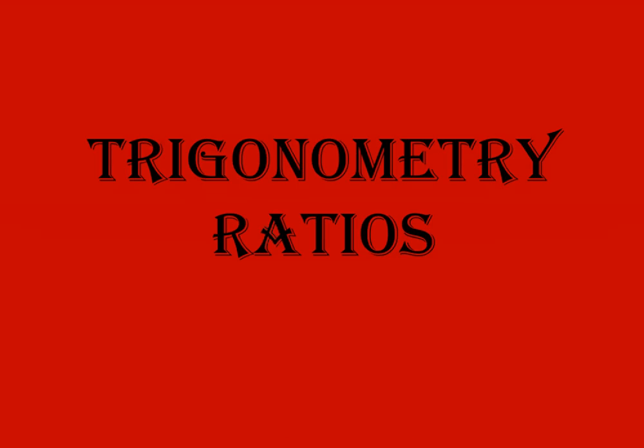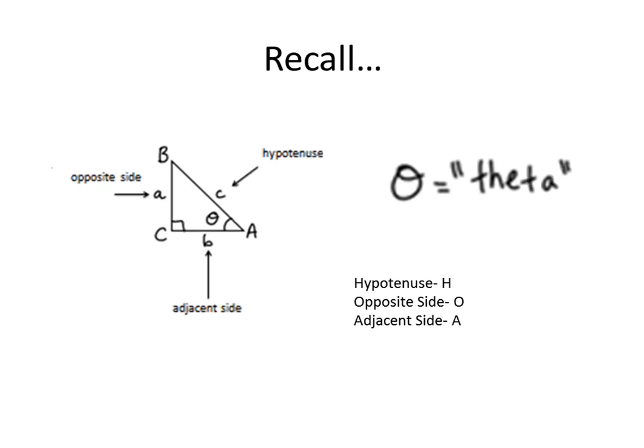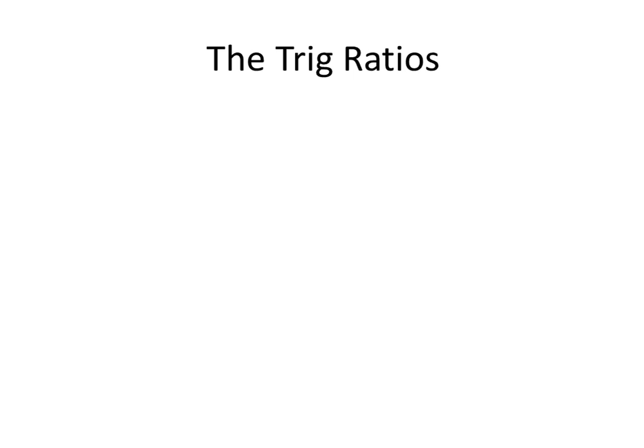We started a new standard on trigonometry and this video talks about the different trigonometry ratios that you need to know in order to solve the various problems we'll be tackling. Recall how to identify the hypotenuse, the adjacent side, and the opposite side. Remember that theta is just an angle in our right triangle, measured in degrees. For shorthand, we write H for hypotenuse, O for opposite, and A for adjacent.